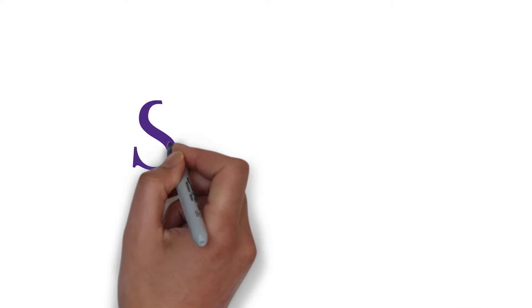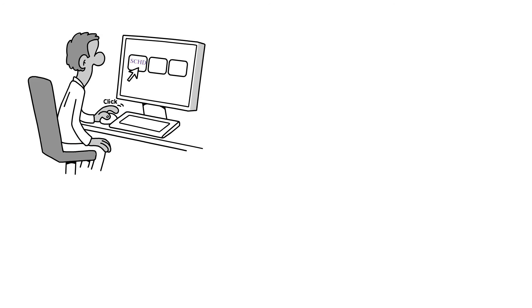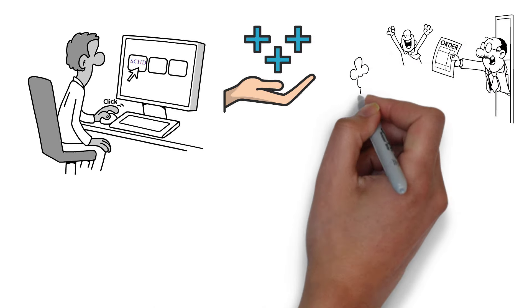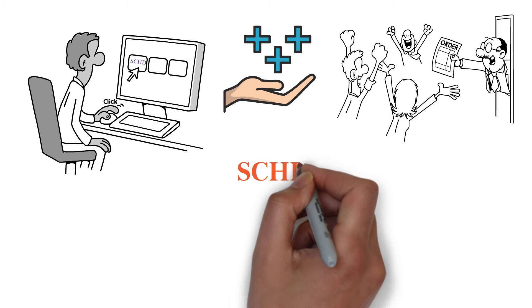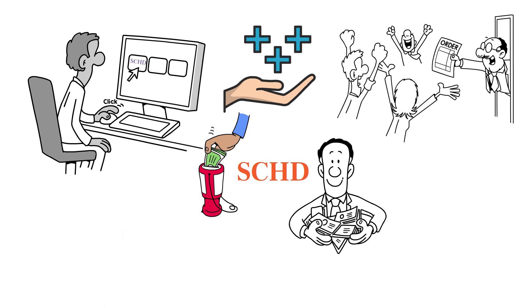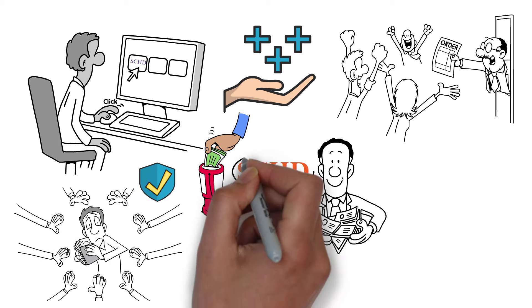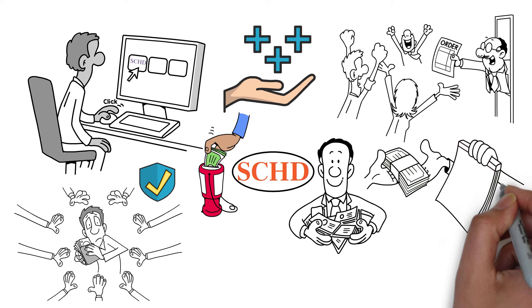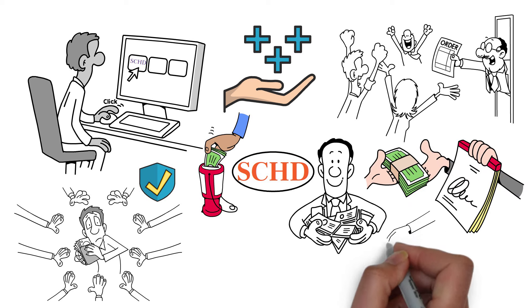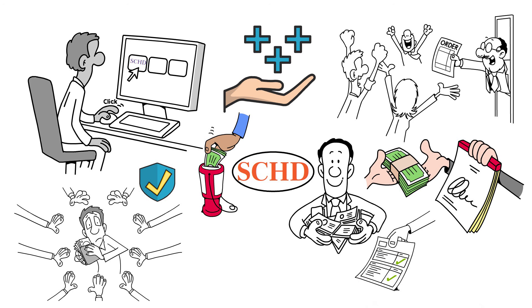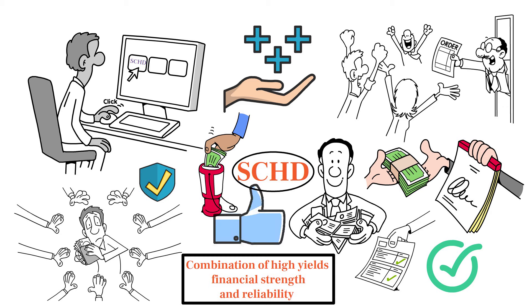What makes SCHD stand out is its stringent selection criteria. The ETF focuses on high-yielding stocks, ensuring that every company included offers attractive dividend yields. But it doesn't stop there. SCHD also prioritizes companies with solid financial health. This means you're investing in businesses with strong balance sheets and the ability to weather economic storms. Additionally, SCHD emphasizes a reliable dividend payment history. The companies selected for this ETF have a proven track record of paying dividends consistently, which is crucial for investors looking for dependable income. This combination of high yields, financial strength, and reliability creates a robust foundation for the ETF.